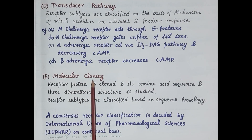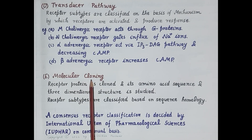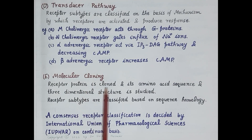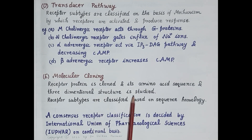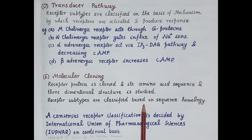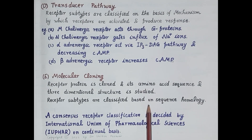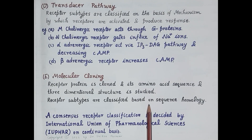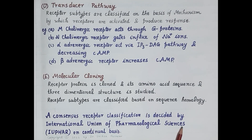Another important criterion is molecular cloning. Receptors are proteins, and the receptor protein is cloned; its amino acid sequence and three-dimensional structure are studied. Receptor subtypes are classified based on similarity in amino acid sequence — that is, sequence homology. Because of the emergence of so many different criteria, there has been considerable confusion, and hence the International Union of Pharmacological Sciences continually provides a consensus receptor classification that is finally accepted.